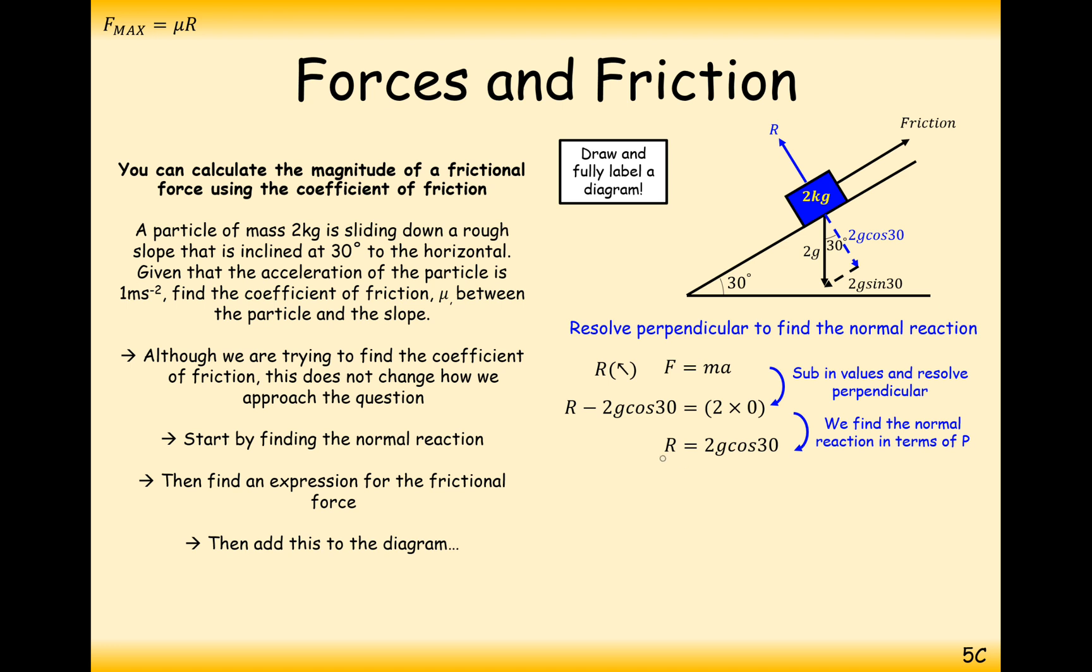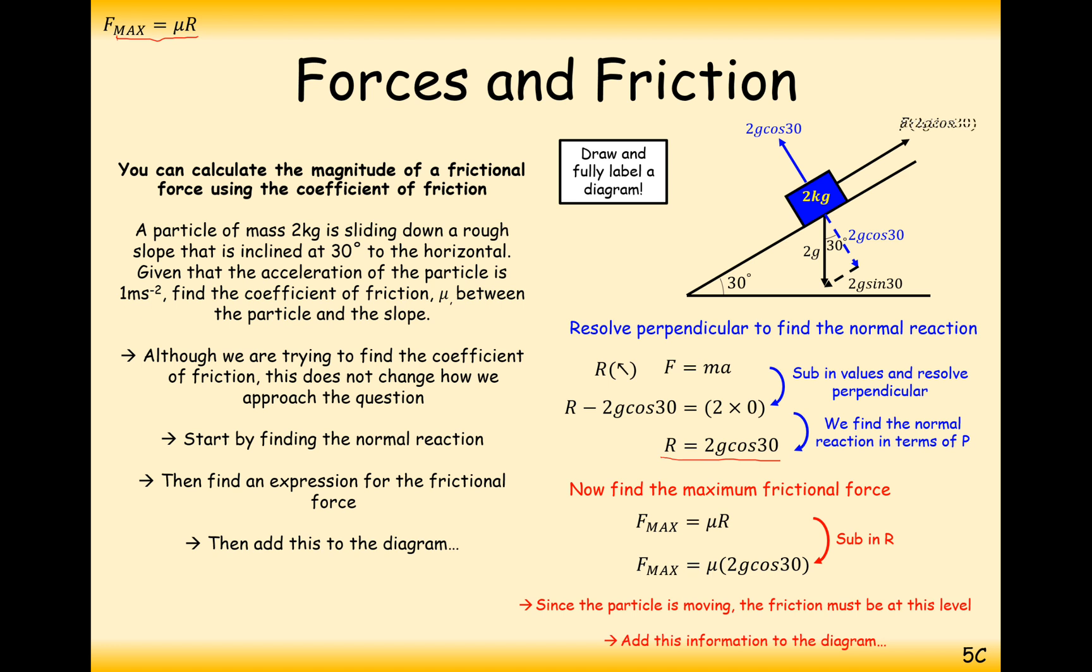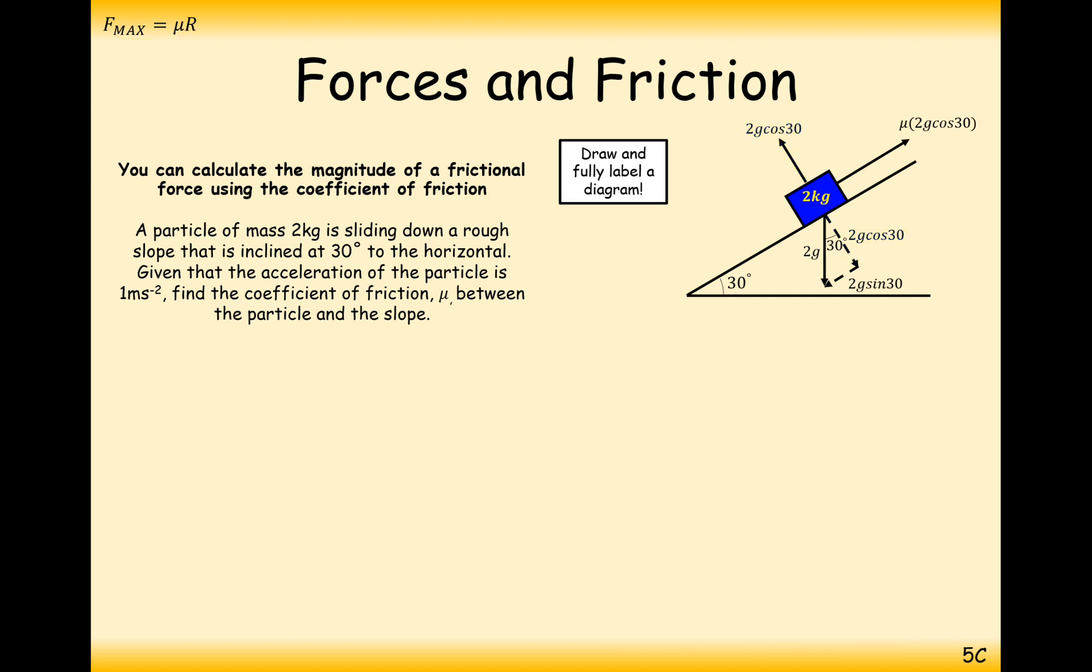The next thing we're going to then do is use this R value in the F equals mu R formula. In this case here then, the frictional force is going to equal mu times 2g cos 30. Let's add this to the diagram then. We've now changed the friction force to mu 2g cos 30.